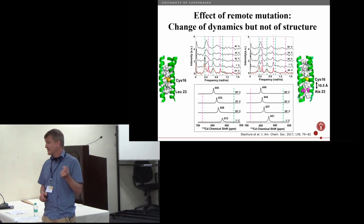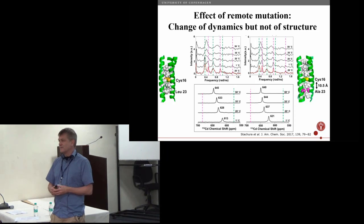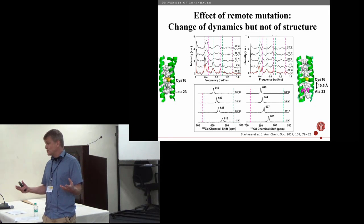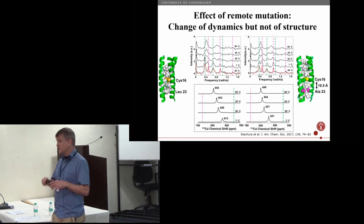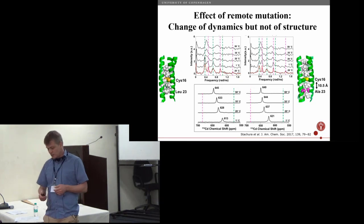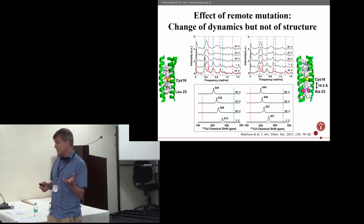This is a property that is a somewhat hot topic in biochemistry. You want to understand how dynamics of proteins affect their function and how that is controlled by the amino acid sequence of the entire protein. Here you could see that even changes relatively far away can change the dynamics at a metal site in a protein. So this was the first example.